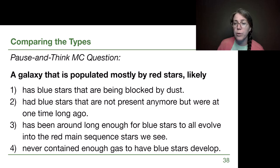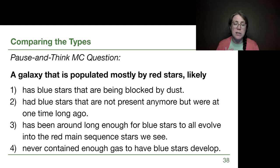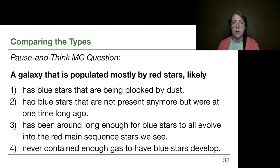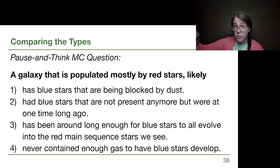For option three — the galaxy has been around long enough for blue stars to all evolve into the red main sequence stars we see — that's a big red flag. We have to think back to the HR diagram: stars do not shift along the main sequence. O and B stars on the main sequence don't become M stars on the main sequence; they become red supergiants, and that phase doesn't last very long before they explode.